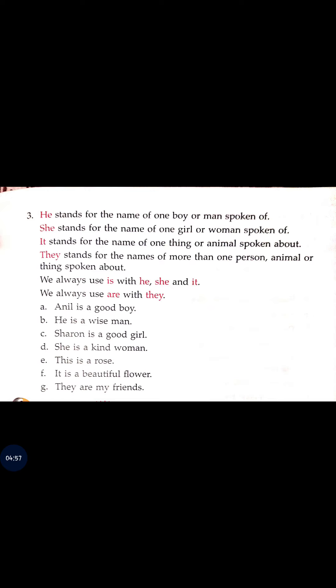Read these examples: Anil is a good boy — he is a wise man. Sharon is a good girl — she is a kind woman. This is a rose — it is a beautiful flower. They are my friends. So with 'he,' 'she,' and 'it' we use 'is,' and with 'they' we use 'are.'